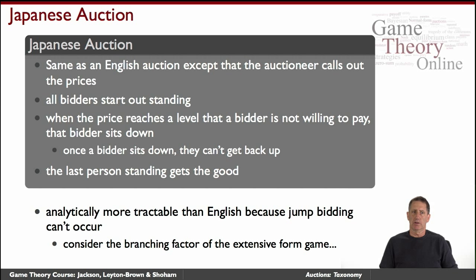The Japanese auction is a less common term, but it's similar to the English auction in that it's an open outcry auction and the price ascends, except here it's the auctioneer that calls out the prices, whether explicitly or by some mechanism like a clock that continuously rises. Think of all the bidders as being in to begin with. The auction might start at $0 for a television and everybody says 'I'm in.' Then the price starts to rise slowly, and at some point bidders decide the price is too high for them and they sit down. They're out of the auction, and this is irrevocable — once they sit down, they cannot stand back up. When only one bidder is left standing, they get the good at that price.